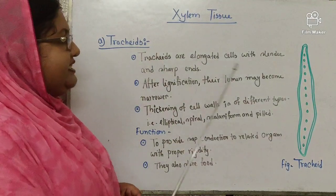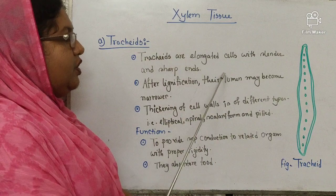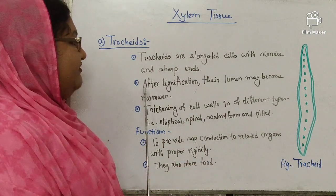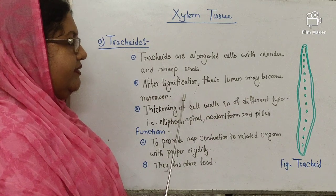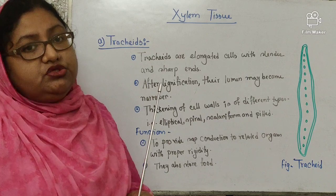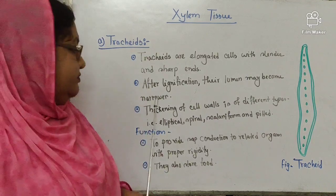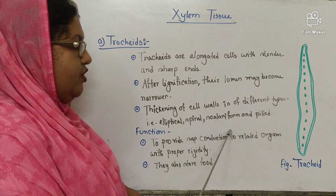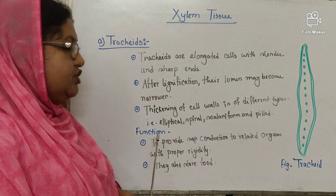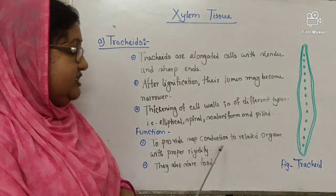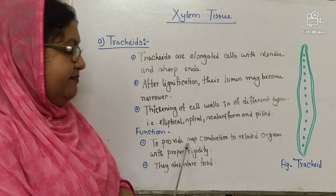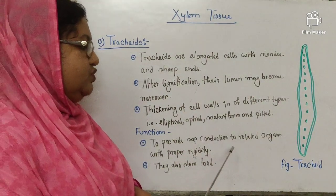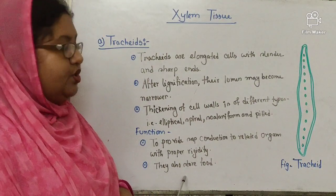The characteristics of tracheid: tracheids are elongated with slender and sharp ends. After lignification, their lumen may become narrower. The lumen is the passage through which water and minerals are conducted from one place to another. Thickening of the cell walls is of different types — they may be annular, spiral, scalariform, and pitted. The main function of tracheid is to provide connected organs with proper sap conduction — when water mixes with different mineral salts that is called sap — and also to store food.